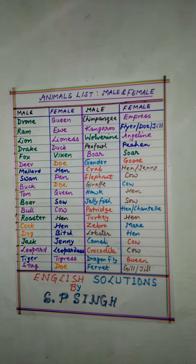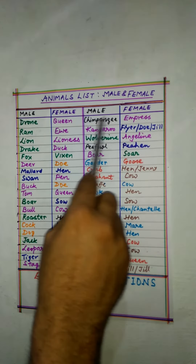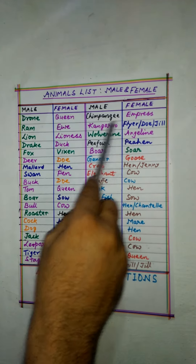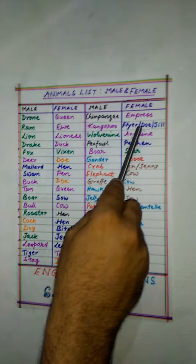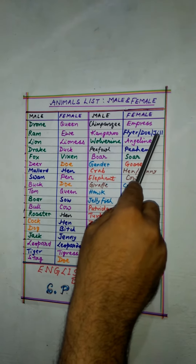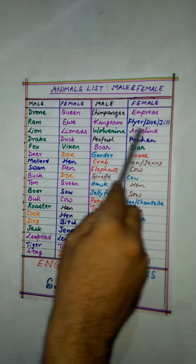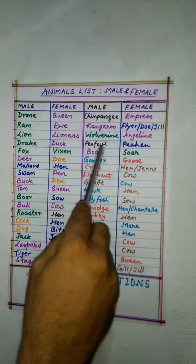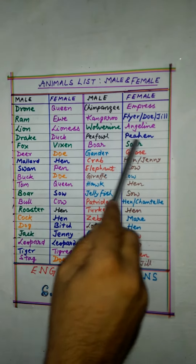And some more words. Chimpanzee — empress. Kangaroo — there are three options: flyer, doe, and jill. Anyone can be chosen. Wolverine — angeline. Peafowl — peahen. Boar — sow.